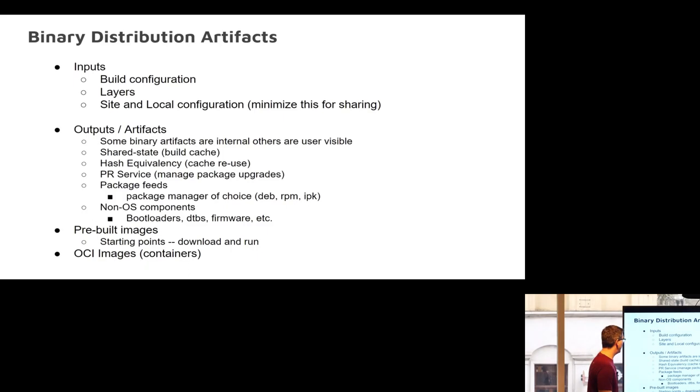This is part of the level setting. Part of the binary distribution artifacts: we could visualize this with that chains model. What are your inputs? The build configurations, the layers, your site and local configuration. These are the inputs. The outputs are some of the binary artifacts. Some of them are internal state, all that stuff that we track, and some of them are user visible. People don't even know they're there half the time. What we would consider an output of the binary distribution would be shared state, hash equivalency, PR service. It's important if you want somebody to be able to extend from the end of your package feed. Package feeds are an obvious output.